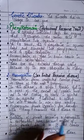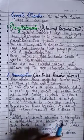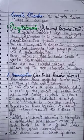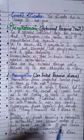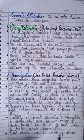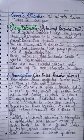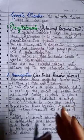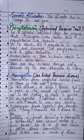A heterozygous female carrier for hemophilia may transmit the disease to her son. The possibility of a female becoming hemophilic is extremely rare because the mother of such a female has to be at least a carrier and the father should be hemophilic. If the mother is a carrier and the father is hemophilic, then the daughter can also have the disease.